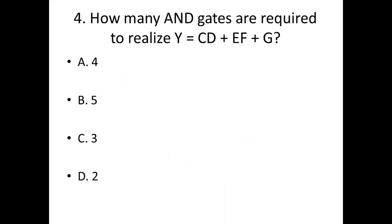Fourth bit: How many AND gates are required to realize Y = CD + EF + G? Option A: 4. Option B: 5. Option C: 3. Option D: 2. Answer: Option D, 2.